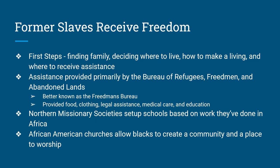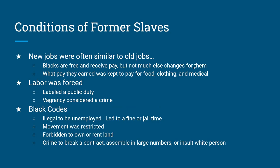The government entity that helps them was called the Freedmen's Bureau, technically called the Bureau of Refugees, Freedmen, and Abandoned Lands, but more often just known as the Freedmen's Bureau. The Freedmen's Bureau is going to give food to former slaves and provide them with clothing, legal assistance, and medical help as well.